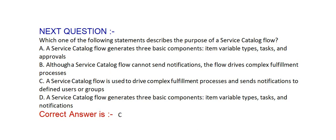Next question: Which one of the following statements describes the purpose of a service catalog flow? Option A: a service catalog flow generates three basic components — item variable type, tasks, and approvals. Option B: although a service catalog flow cannot send notifications, the flow drives complex fulfillment processes. Option C: a service catalog flow is used to drive complex fulfillment processes and sends notifications to defined users or groups.